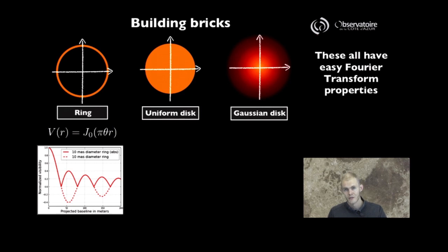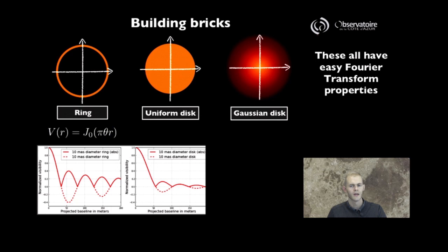If you look at the same visibility curve for a uniform disk, you see something that looks somewhat similar. We still see modulation of that visibility with a function that bounces back as you go toward longer and longer baselines.